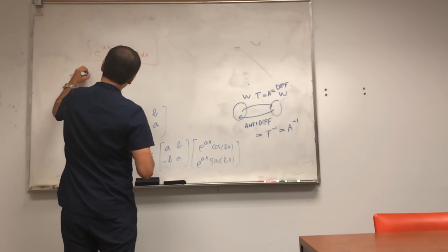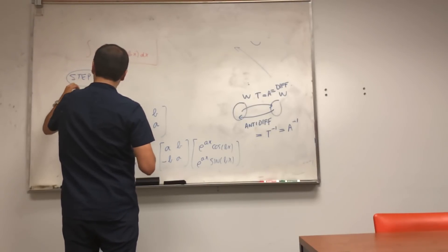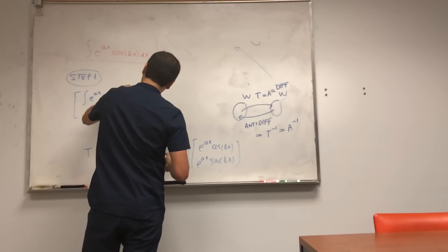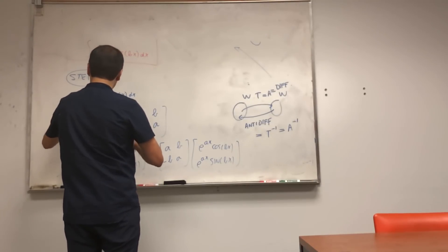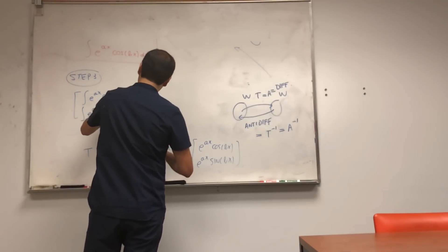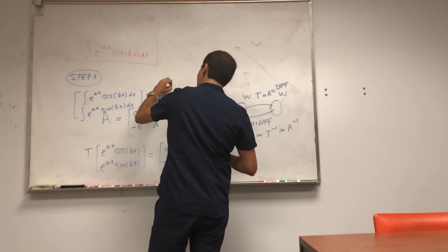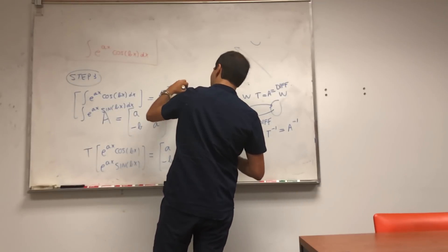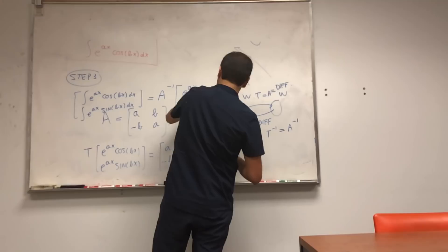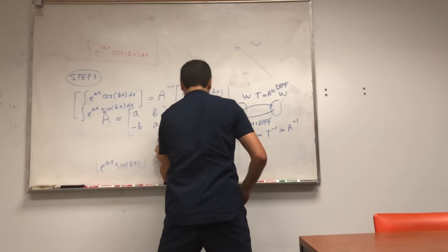Here comes a neat thing. Our answer, the integral of e to the ax cosine of bx dx and integral of e to the ax sine of bx dx, is just given by A inverse of our vectors e to the ax cosine of bx, e to the ax sine of bx. But now we have our matrix here.